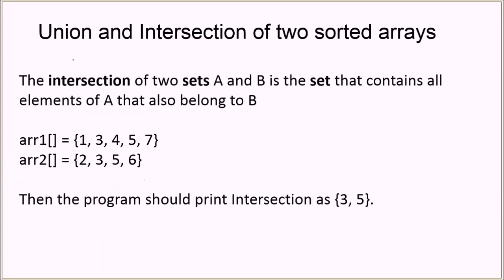Similarly, the intersection is basically the common elements between the two arrays. Given array 1 and array 2, the common elements are 3 and 5, so 3 and 5 become the intersection. Intersection can also be phrased as the set of elements of A which also belong to B — that is, the common elements.